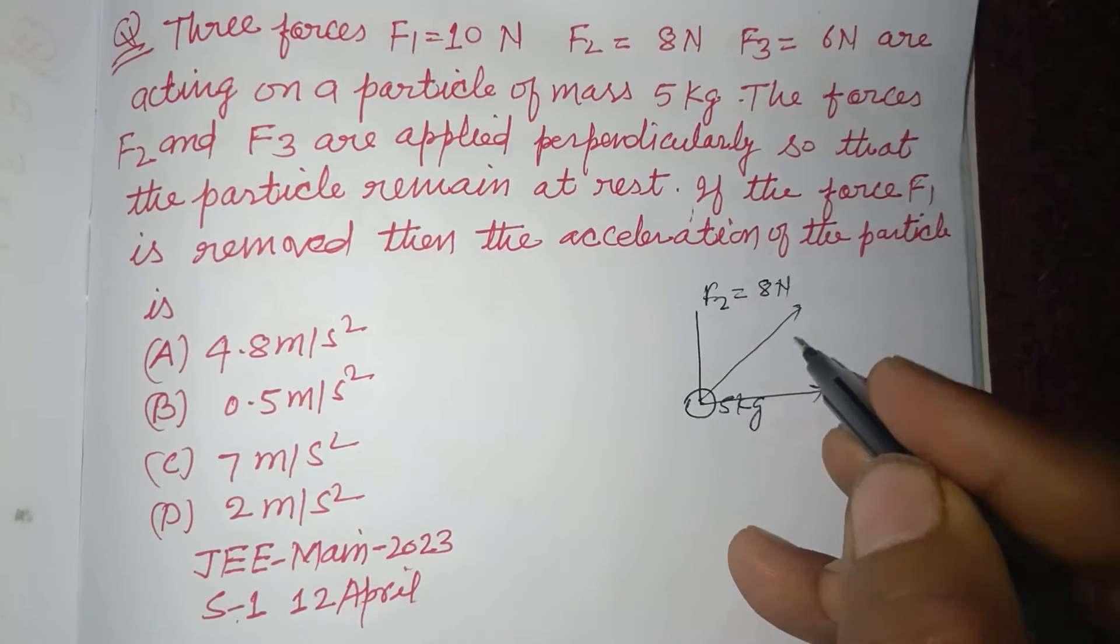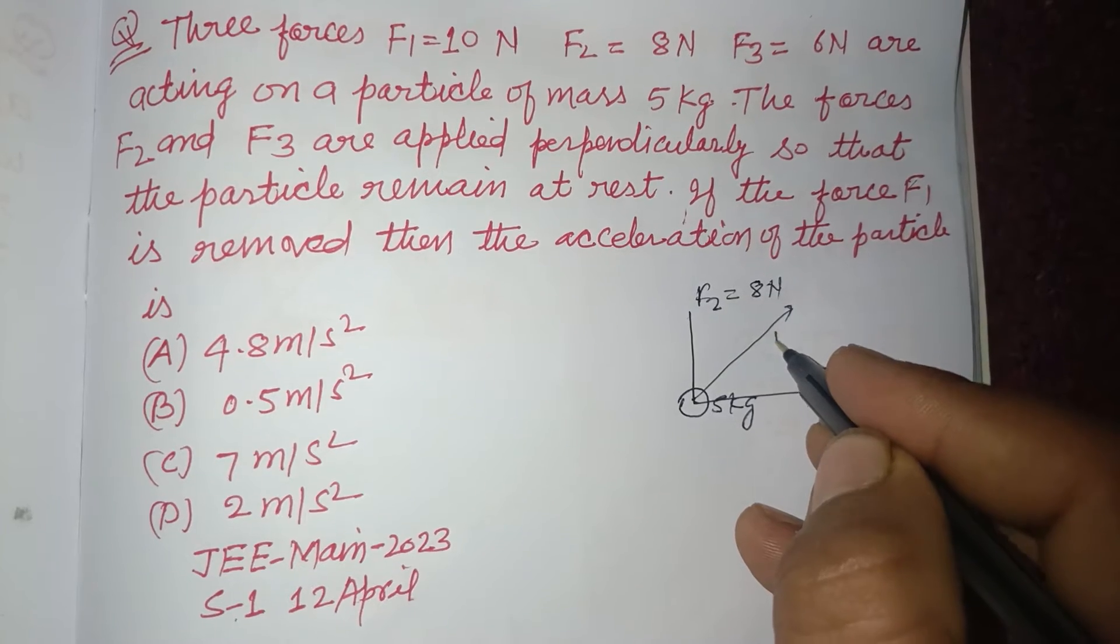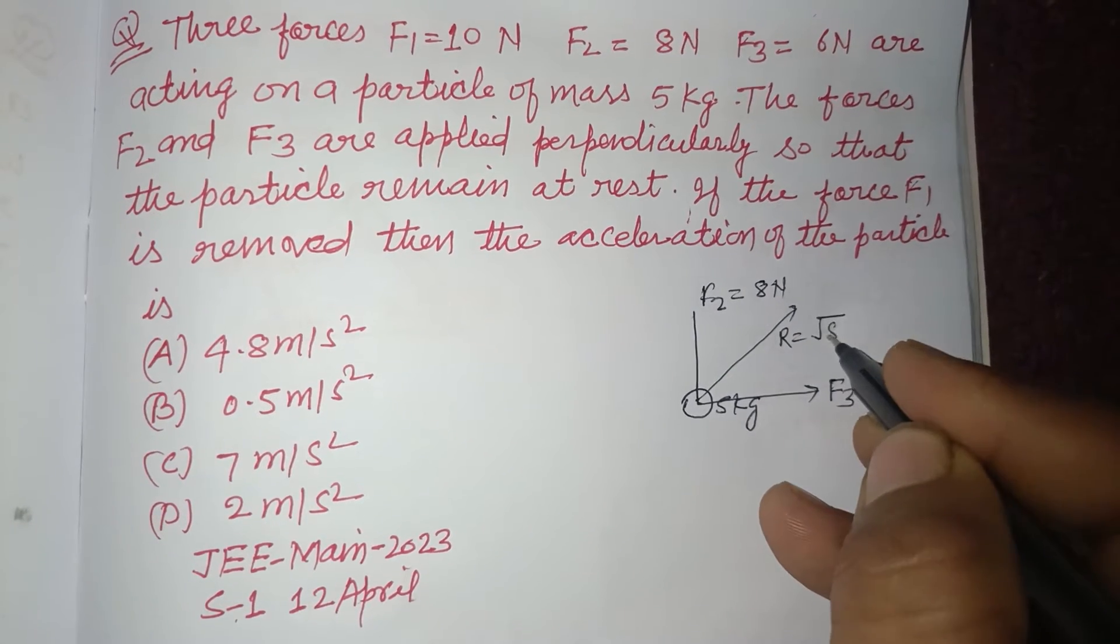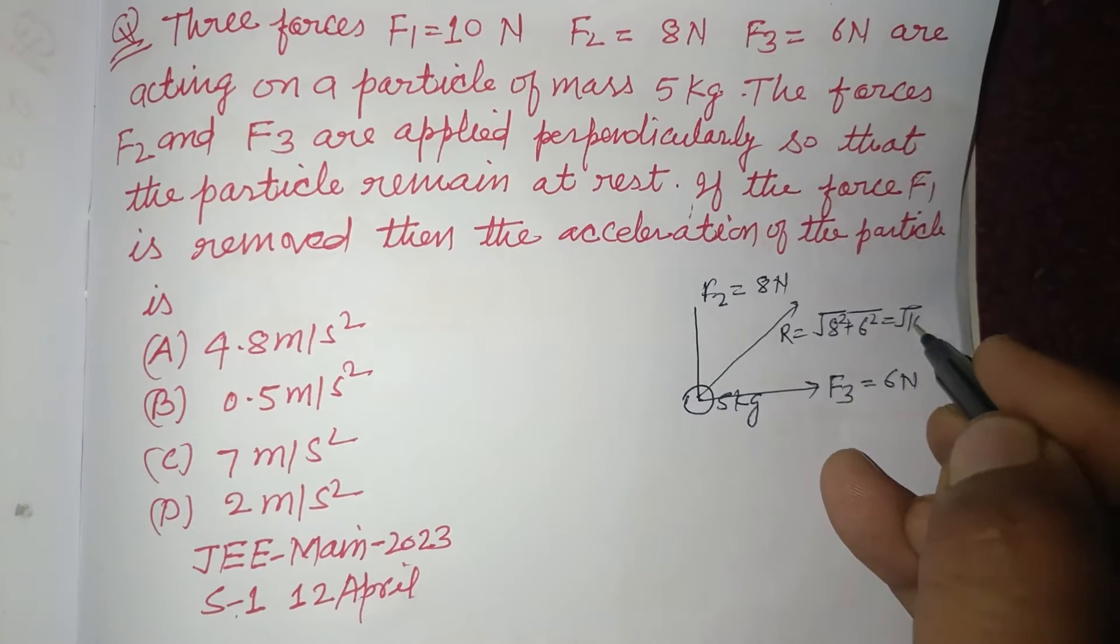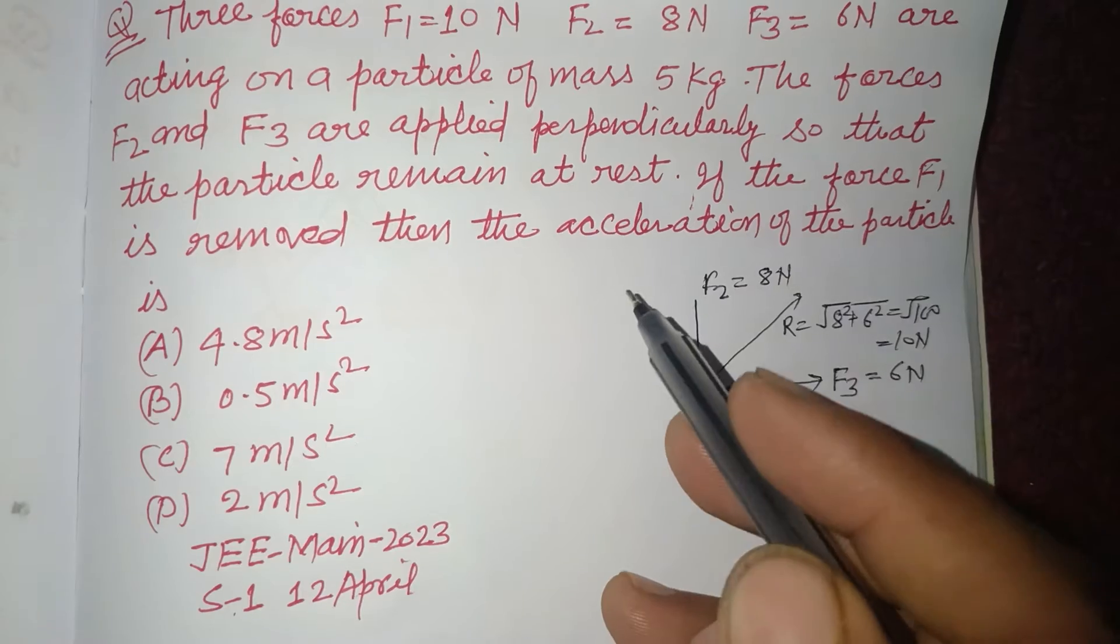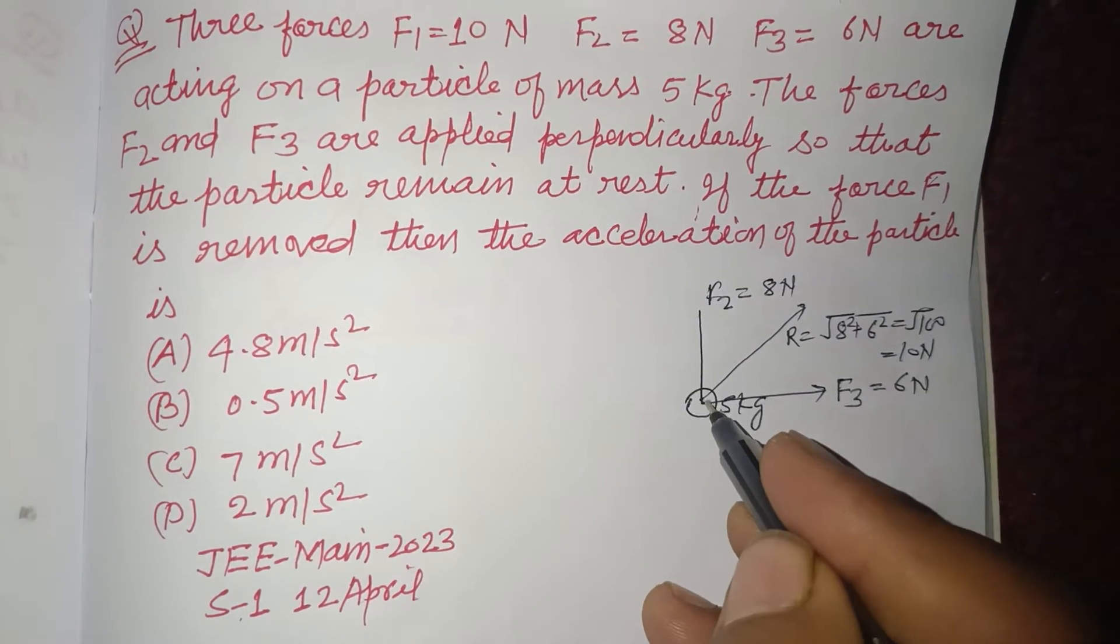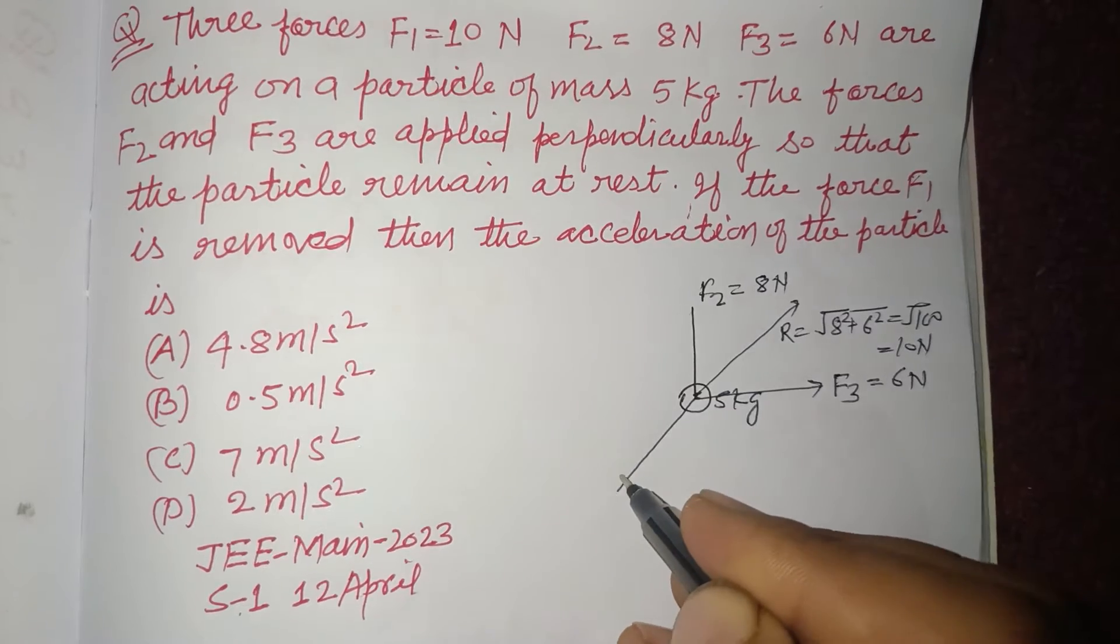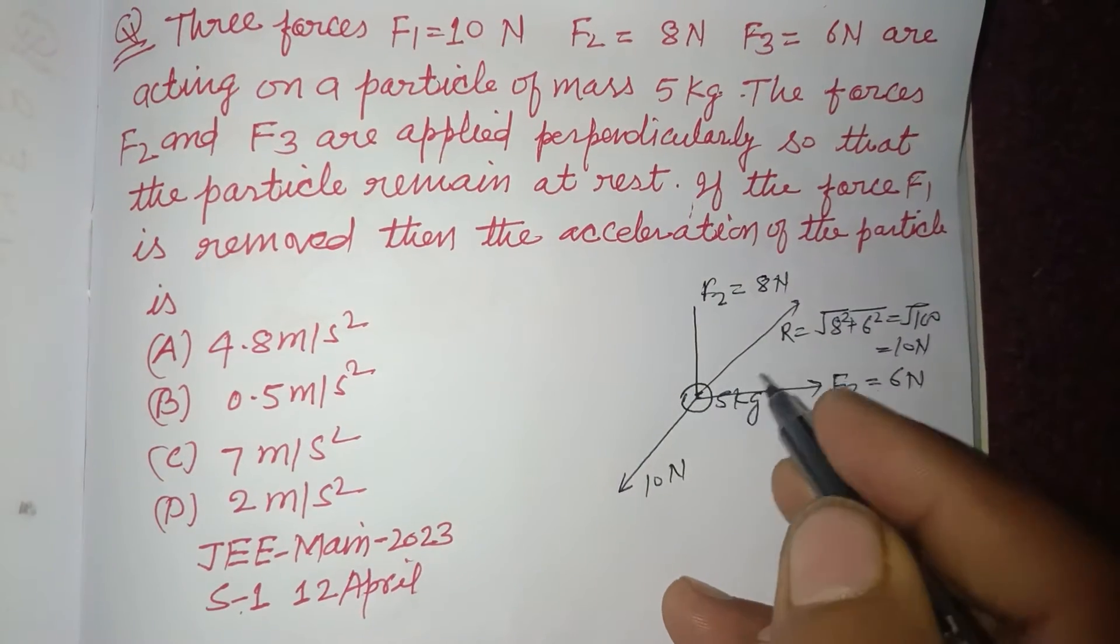So this will be root of 8 squared plus 6 squared, so this is 100, equal to 10 N. And the other force F1 acts in its opposite direction so that it nullifies the effect